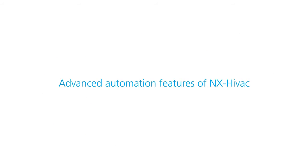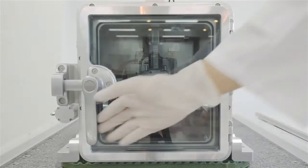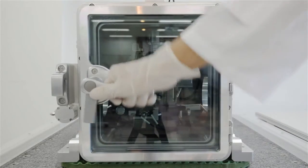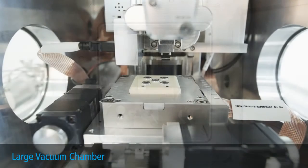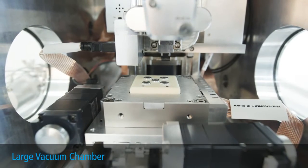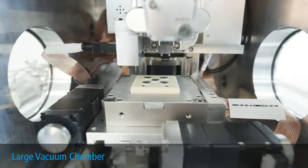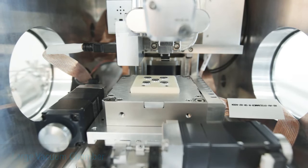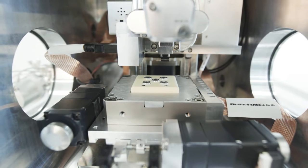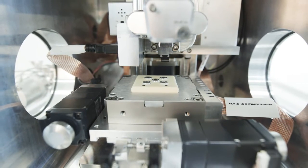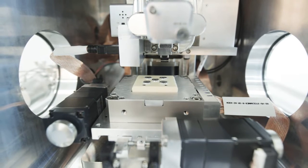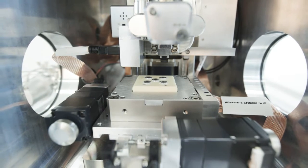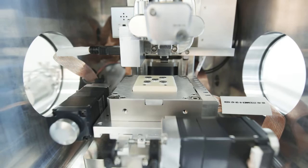Let's run through some key features of PARC-NX HIVAC. First, PARC-NX HIVAC has a large vacuum chamber, spacious enough to handle samples of various sizes. Like other PARC AFM systems in our NX product line, the PARC-NX HIVAC has decoupled XY and Z scanners. This architecture removes scanner artifacts, enabling the most accurate AFM imaging possible.